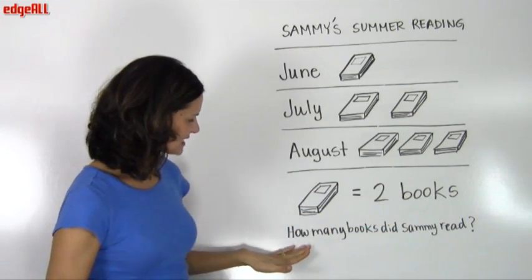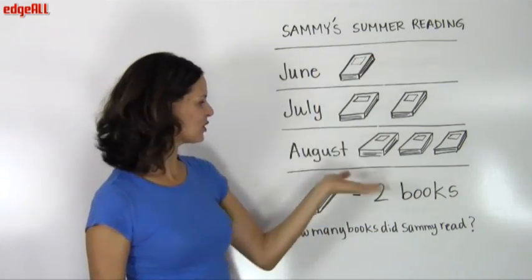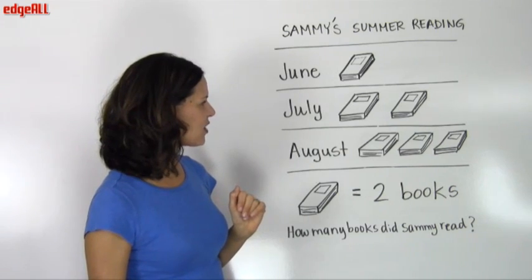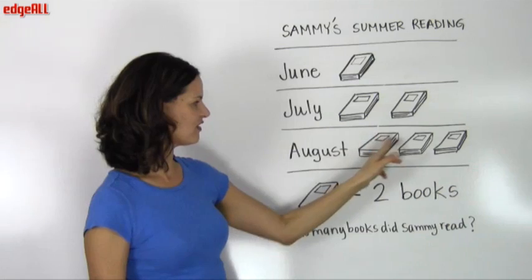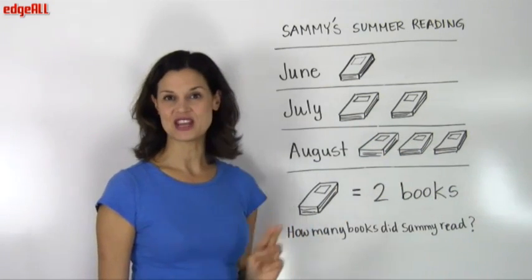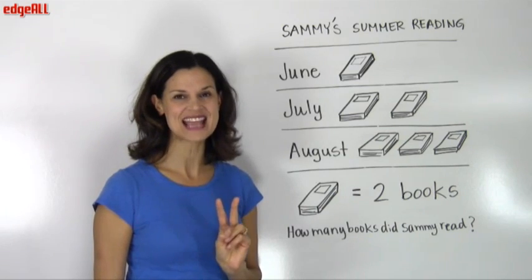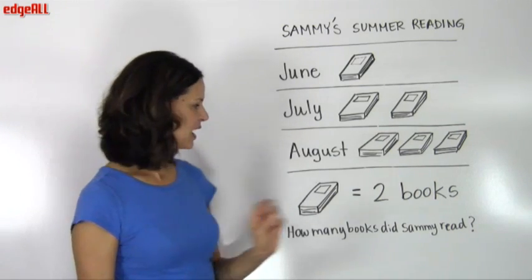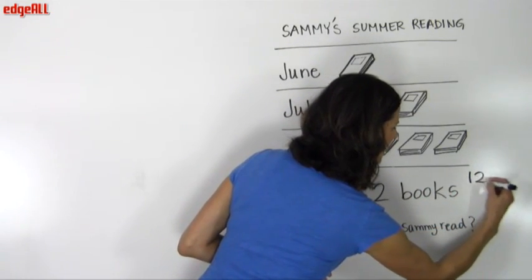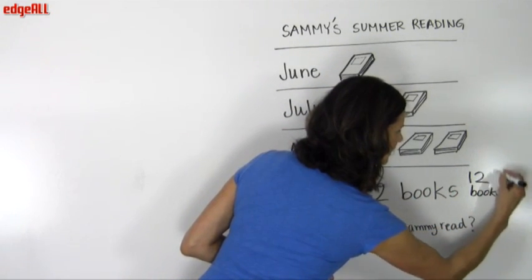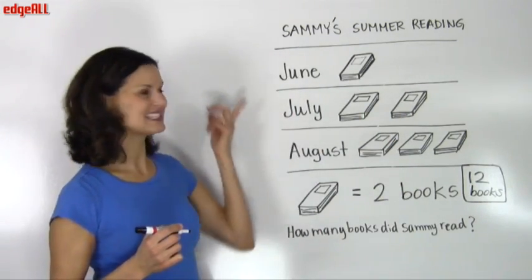So, our question asks us, how many books did Sammy read in his summer reading? Since we've counted up our book symbols as one, two, three, four, five, six, and we know that each book symbol equals two books read by Sammy over the summer, we can see that our answer, then, is going to be a total of twelve books read by Sammy over the summer reading.